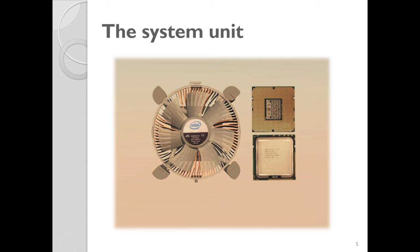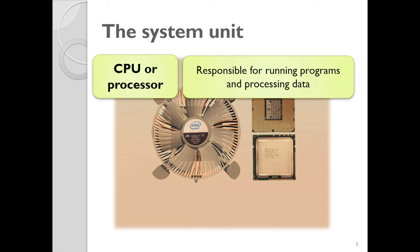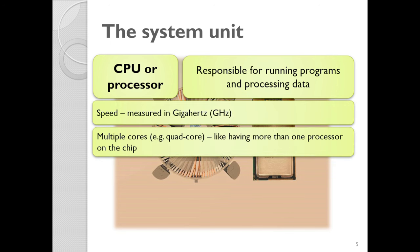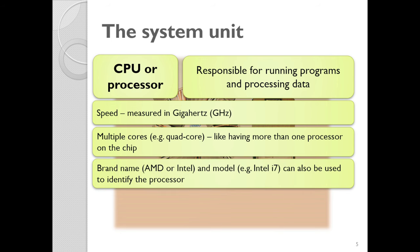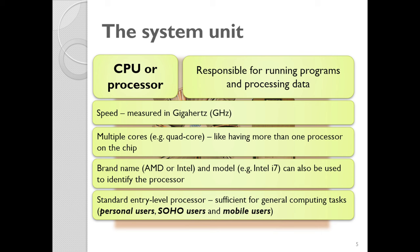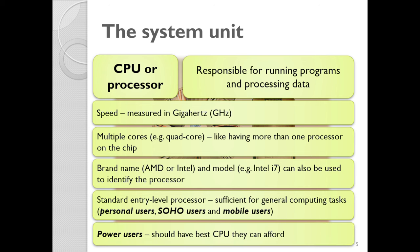Inside our system unit we're looking at things like the CPU — our processor. This is responsible for running programs and processing data. Its speed is measured in gigahertz and it can sometimes have multiple cores, which is like having more than one processor but not physically so. There are different brand names like AMD or Intel, which influences the power of that processor. AMD processors are more geared towards gaming than Intel. For most people, standard entry-level processors are fine for personal, SOHO, and mobile users. But if you are going to be a power user, you need to buy the best CPU you can afford.